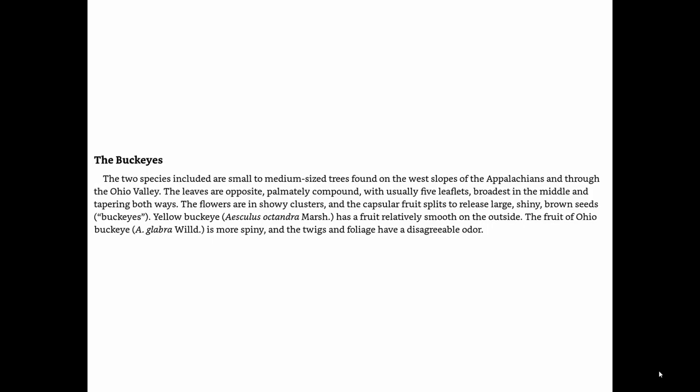Buckeyes: there are two species in our area. The far more common one is Ohio buckeye, Aesculus glabra, whose fruits are more spiny than the southern, less common yellow buckeye, Aesculus octandra — though some Ohio buckeye fruits can be pretty smooth. A key distinguishing feature: scratch and sniff — Ohio buckeye smells kind of stinky like a skunk, and yellow buckeye does not.